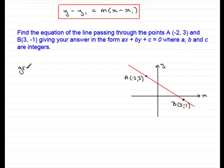And I can get the gradient by saying that the gradient of AB equals the difference in the y values. So that's going to be 3 minus -1, 3 minus -1, all divided by the difference in the x coordinates. That would be -2 minus 3.